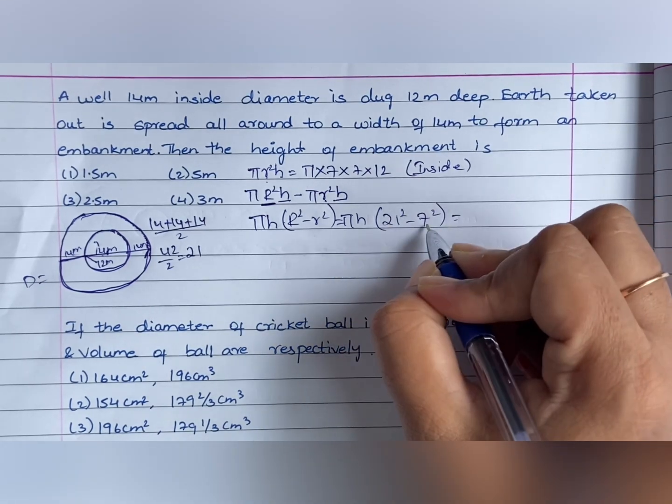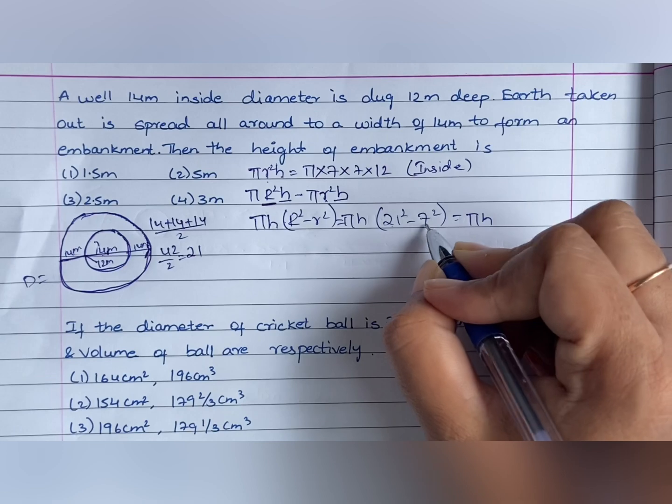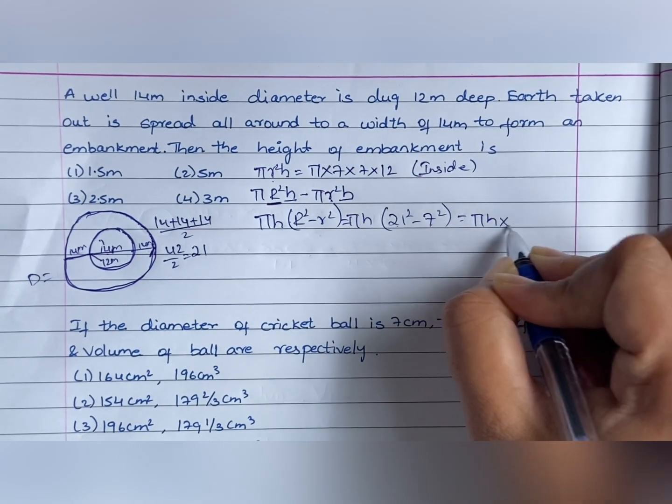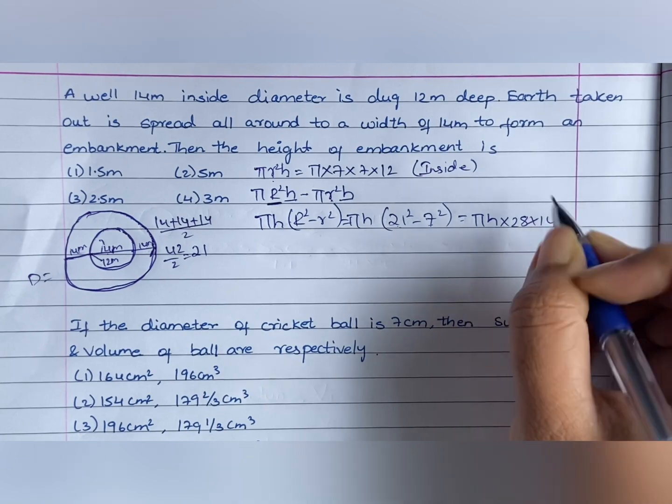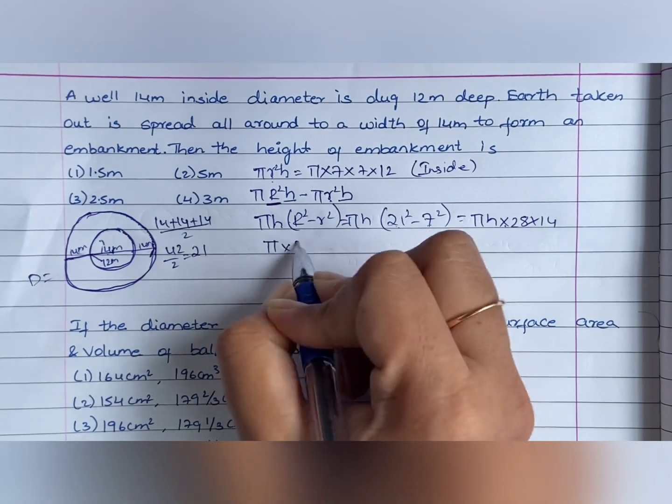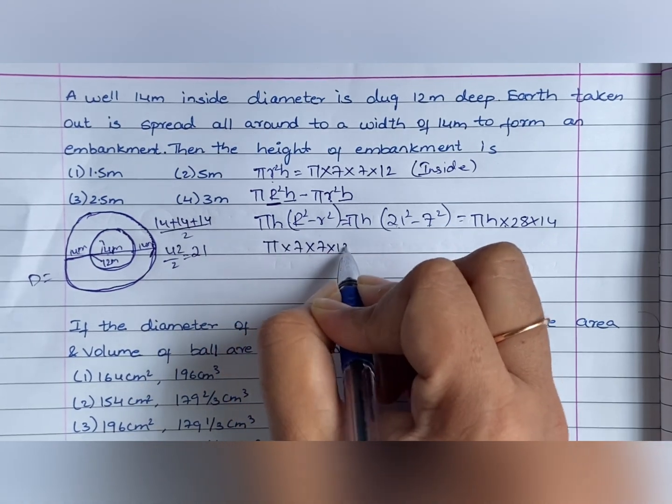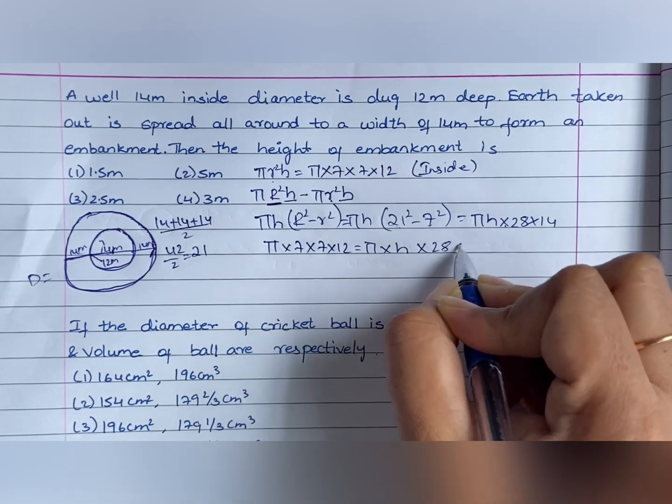This can be written as a square minus b square. So, a plus b into a minus b. pi into h into 21 plus 7 is 28, 21 minus 7 is 14. So, this volume must be equal to this volume. So, pi into 7 into 7 into 12 is equal to pi into h into 28 into 14.